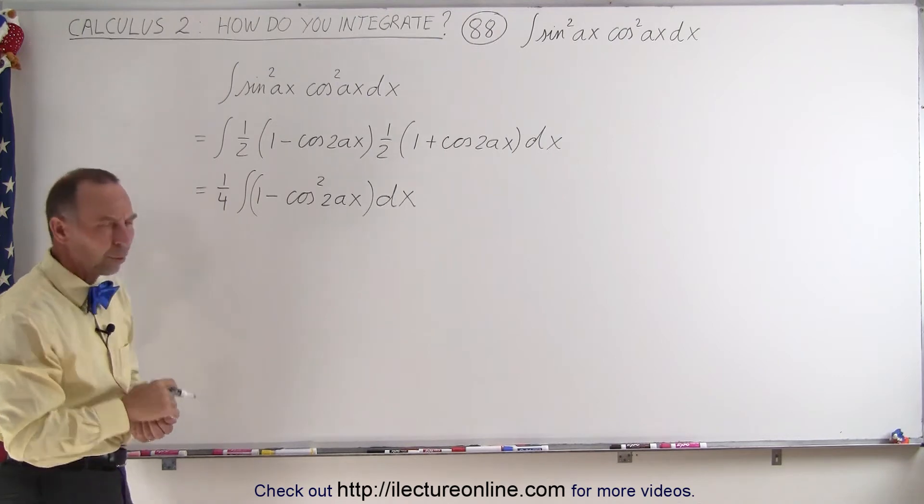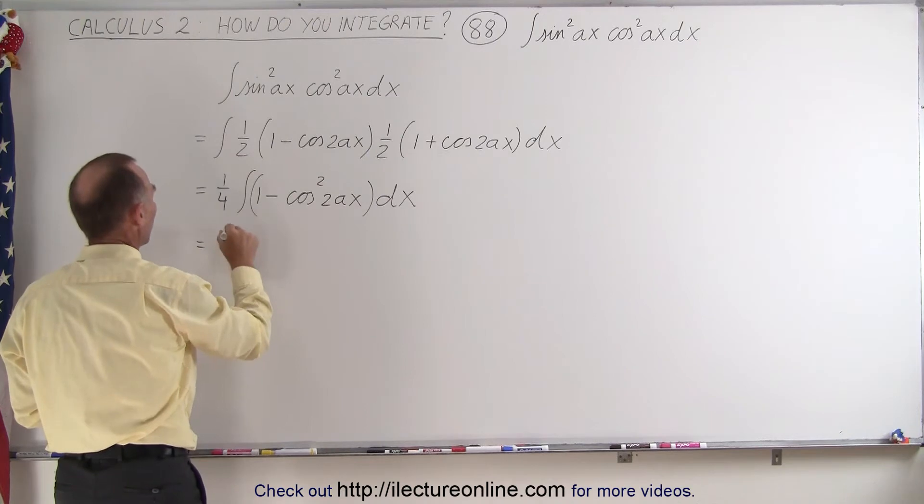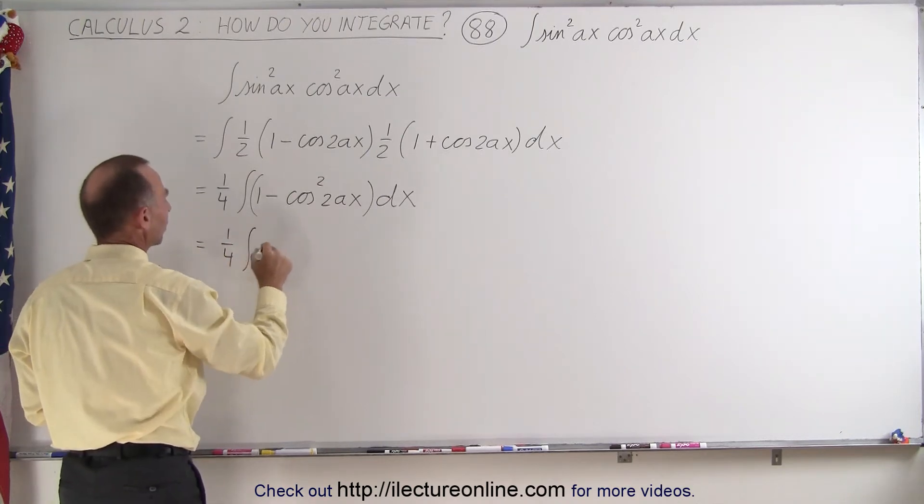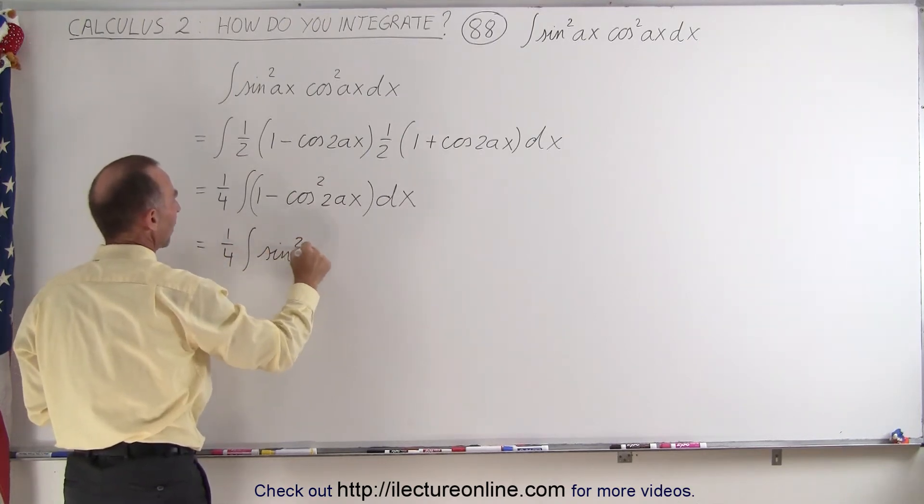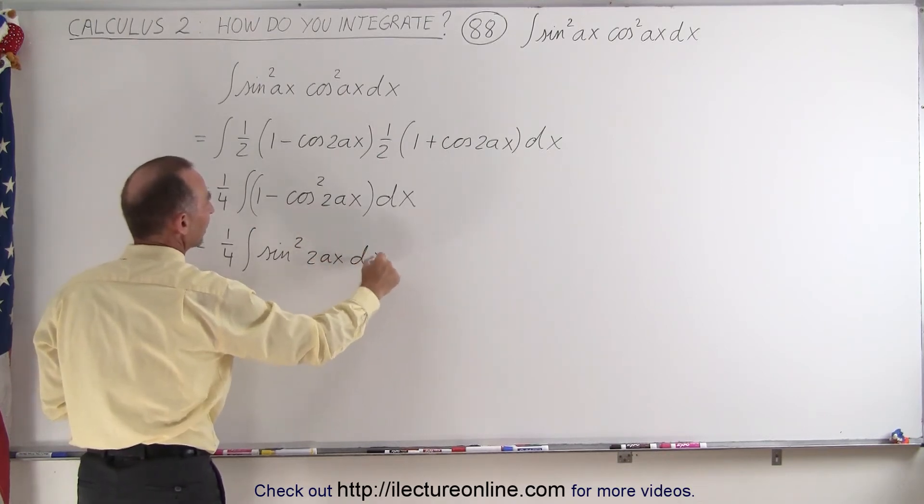All right, so 1 minus the cosine square, well, that can be written as the sine square, so this can be written as 1 quarter times the integral of the sine square of 2Ax times dx.